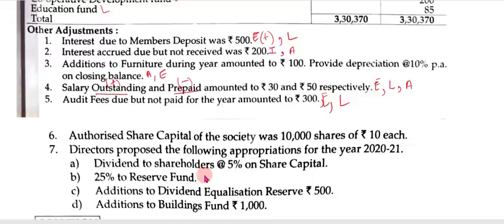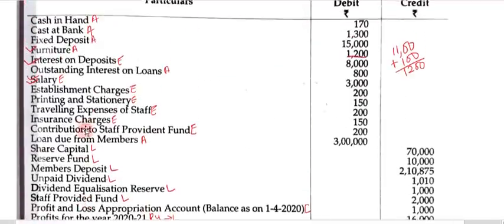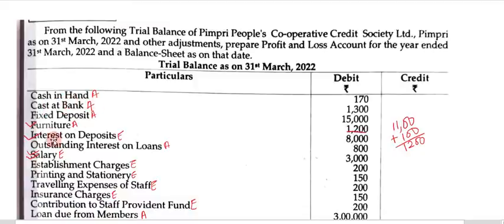Adjustment 6: authorized share capital of the society was 10,000 shares of Rs. 10 each — only one effect, it goes to liabilities. Adjustment 7: directors proposed the following appropriations for the year 2021 — dividend to shareholders at 5% on share capital, 25% to reserve fund, addition to dividend equalization reserve Rs. 500, and addition to buildings fund Rs. 1,000. Both effects of adjustment 7 will come in the liability side but under different heads. We'll solve these at the end.